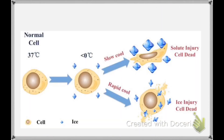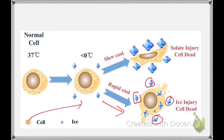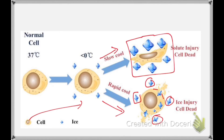When we cool cells normally, ice crystals form around the cells as well as inside the cytoplasm, causing injury and the cell may rupture. With slow cooling, certain solutes in the medium may also cause injury to the cells, leading to cell death. To avoid such injuries, we generally add some cryoprotectants.